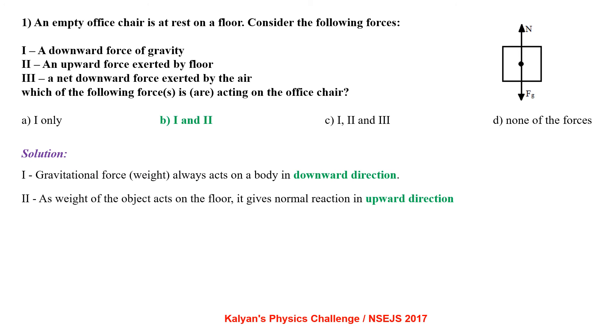An empty office chair is at rest on a floor. Consider the following forces: a downward force of gravity, an upward force exerted by the floor, a net downward force exerted by the air. Which of the following forces is acting on the office chair?